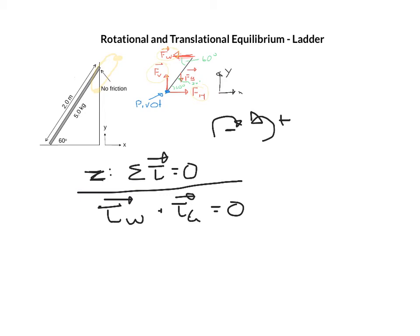And my gravity is going clockwise so torque from gravity is negative zero. So I have the torque from the wall must be equal to the torque from the gravity. And the torque from the wall will be my force from the wall times my length of the ladder so times two meters times sine of the angle so times sine of 60.